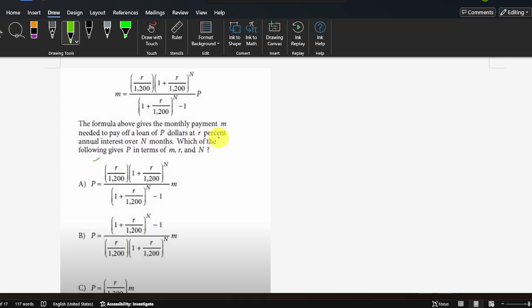So they want to create a formula, p equals something. Okay, we just do that. They want to create a formula p equals. The original left is m. Both sides divide this part, divide all this part.